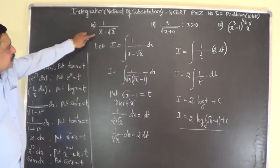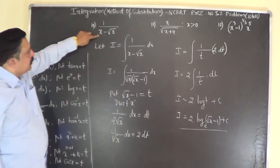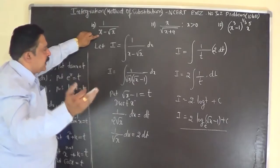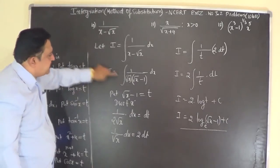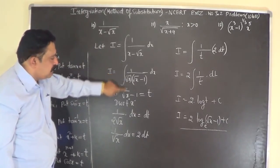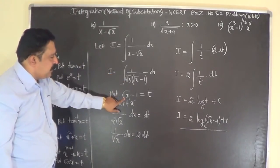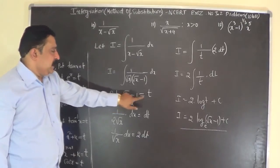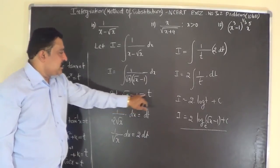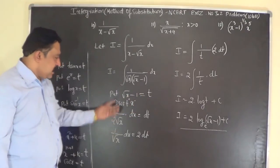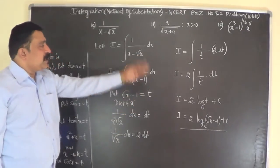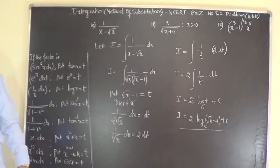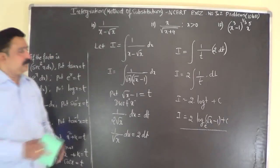Note that when the denominator has x minus √x, it is better to take √x as a common factor and put the remaining part, that is √x minus 1, as t. Differentiate to get the replacement factor and proceed by the method of substitution.